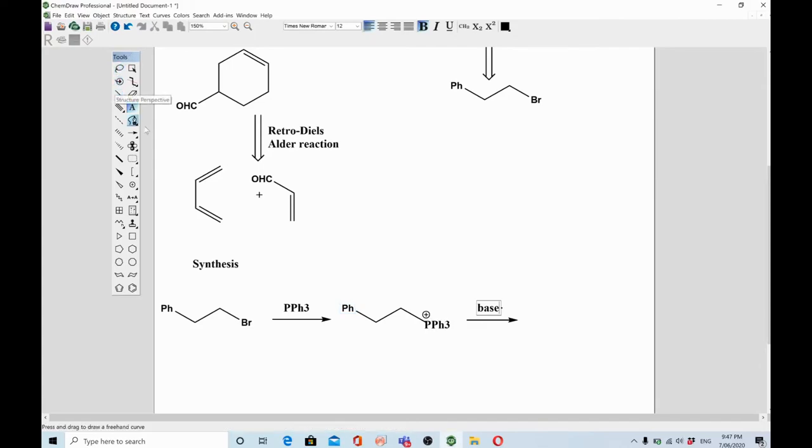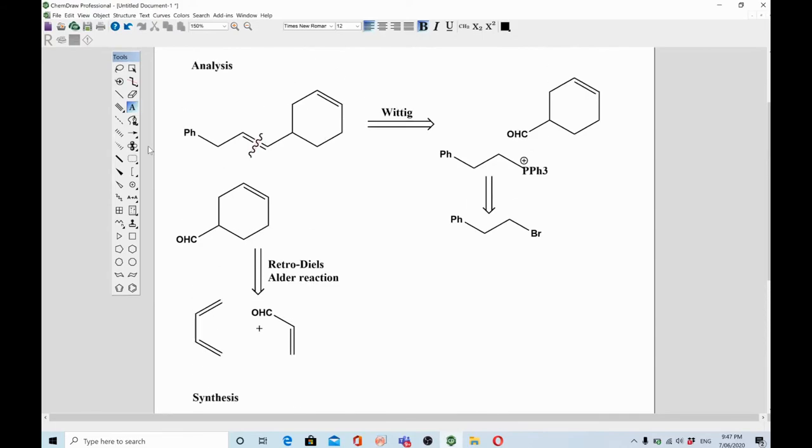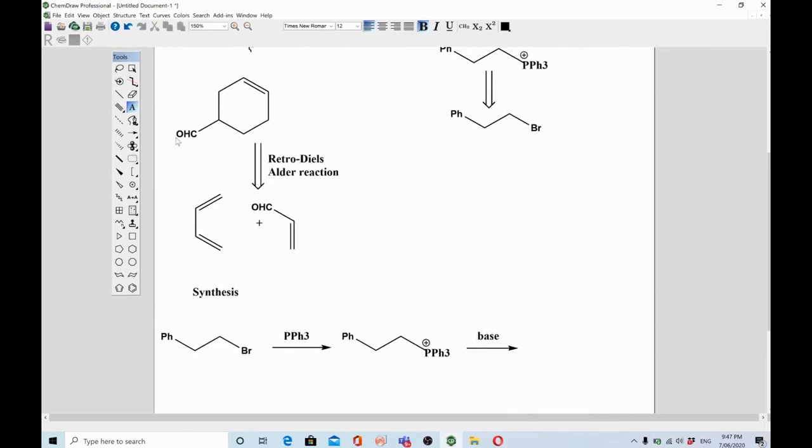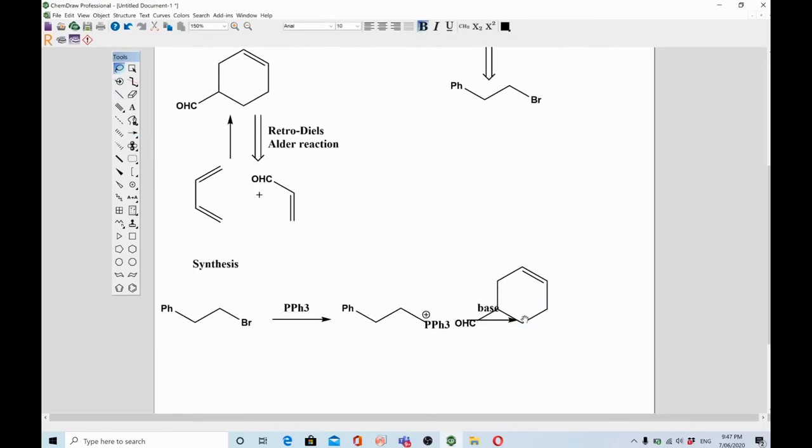If you don't understand the reaction mechanism of Wittig reagent, feel free to ask and I'm more than happy to explain. This direction is simple: what you have to do is combine these two fragments in the forward direction and you will get the product.